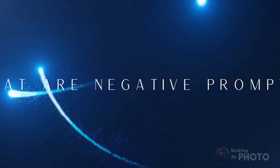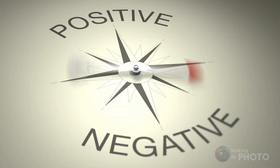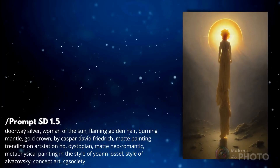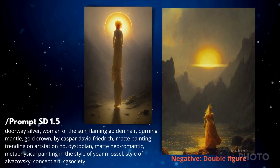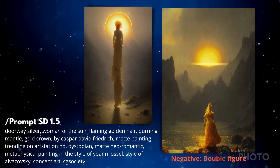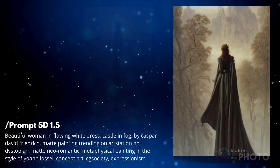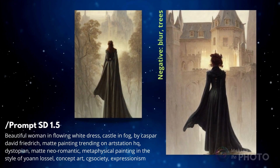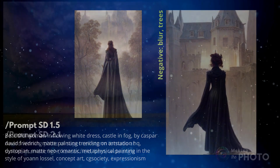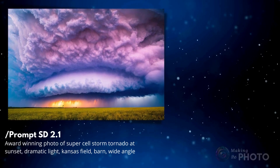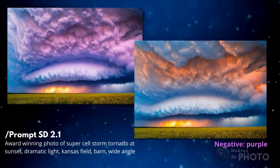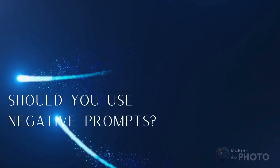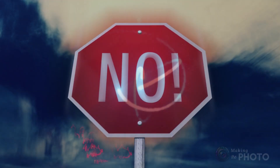A positive prompt describes what you want to see — we do this all the time. A negative prompt tells the AI what you don't want to see in your image. Telling the AI what you don't want can be as powerful as telling it what you do want. You might use a negative prompt to correct distortions, remove objects, or change colors. Some creators swear by negative prompts, others avoid them, but many just ignore them.